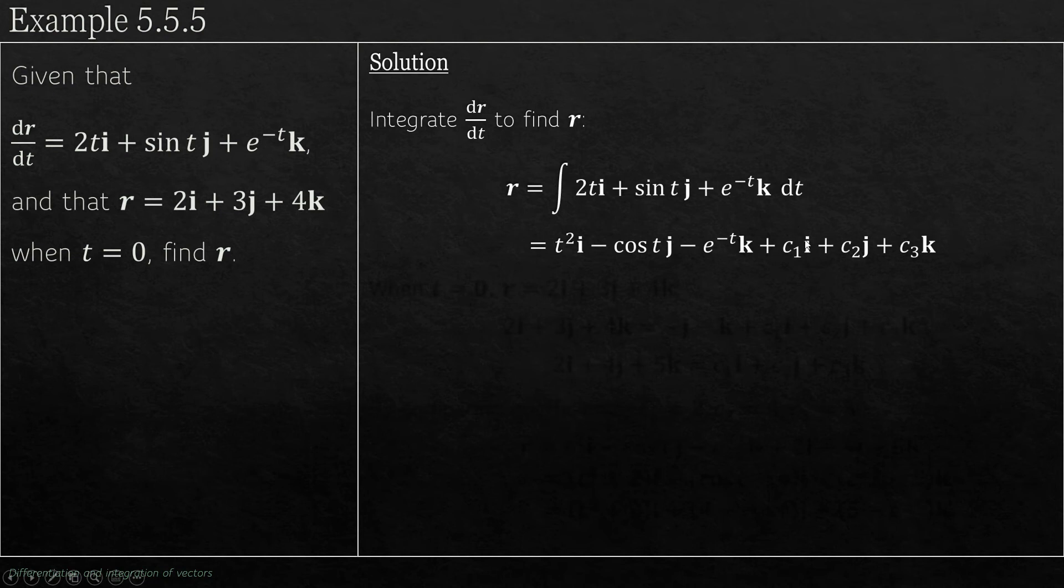We now know when t is 0, r was 2i + 3j + 4k. Let's substitute this into the line above. So on the left we have r, r is 2i + 3j + 4k, and then sub t = 0 into the right hand side.